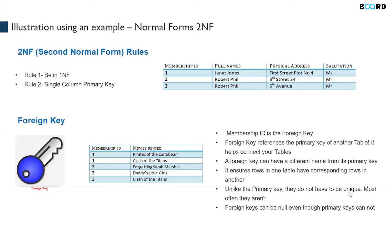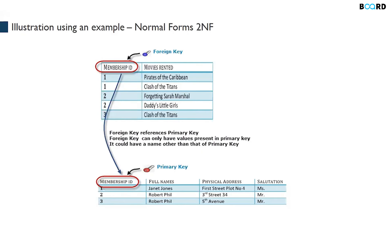Unlike the primary key, foreign keys do not have to be unique — they can be repeating. Foreign keys can also be null, even though primary keys cannot.